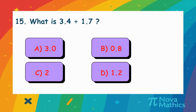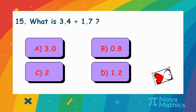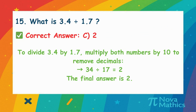14. What is 3.4 divided by 1.7? We want to divide 3.4 by 1.7. Multiply both by 10 to make them whole numbers. 34 divided by 17 equals 2.